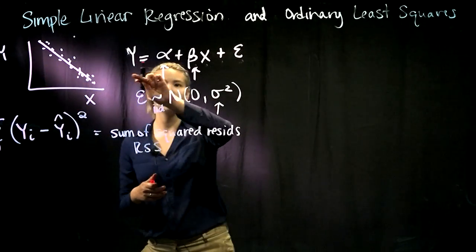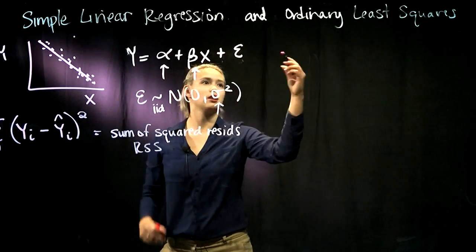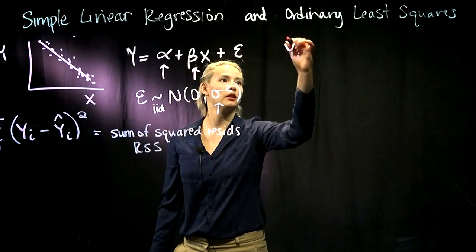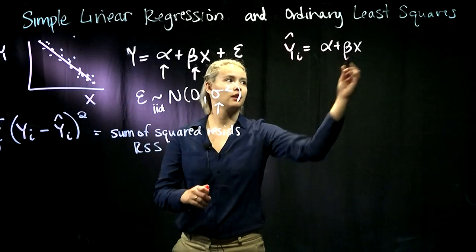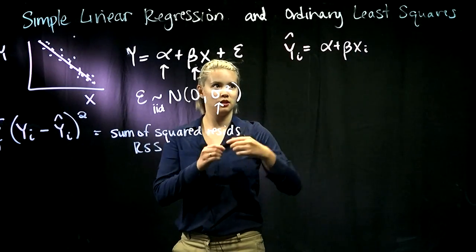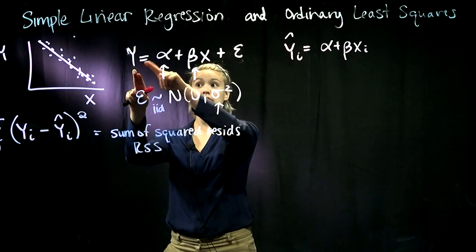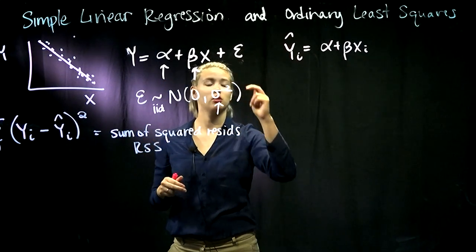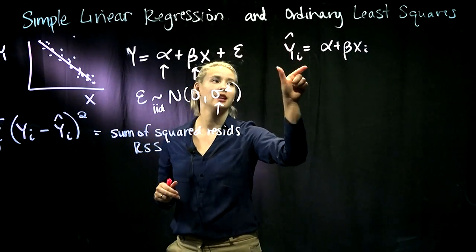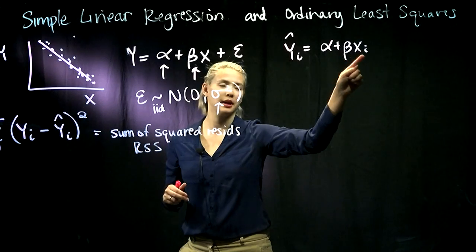Remember that this is one way to write our regression equation. Another way to write it is like this. We could either write y equals alpha plus beta x plus epsilon, or we could write y hat equals alpha plus beta times xi.